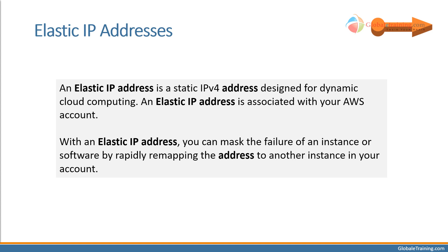Elastic IP addresses. An Elastic IP address is a static IPv4 address designed for dynamic cloud computing and is associated with your AWS account. If you have an elastic IP address, you can assign it to, say, the first EC2 instance — and if that instance dies or something happens, you can take that IP address and assign it to another EC2 instance. With an elastic IP address, you can mask the failure of an instance by rapidly remapping the address to another instance in your account.